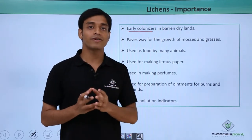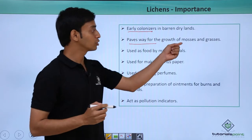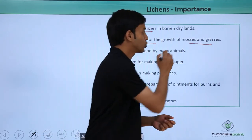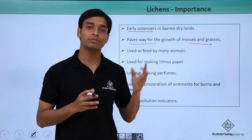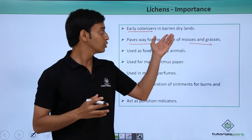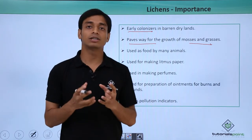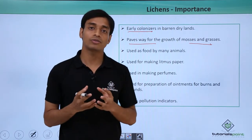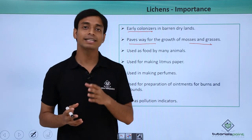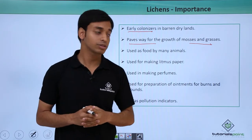Because of this fact, it paves the way for the growth of mostly mosses and grass. It helps in the growth of these types of organisms because these were initially barren lands — it helps in modifying the soil structure of these places, hence it paves the way for the growth of certain organisms.